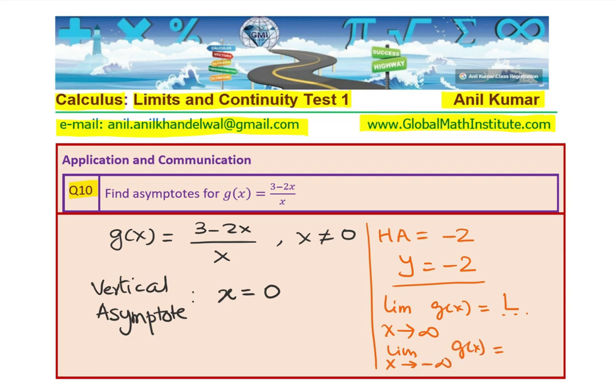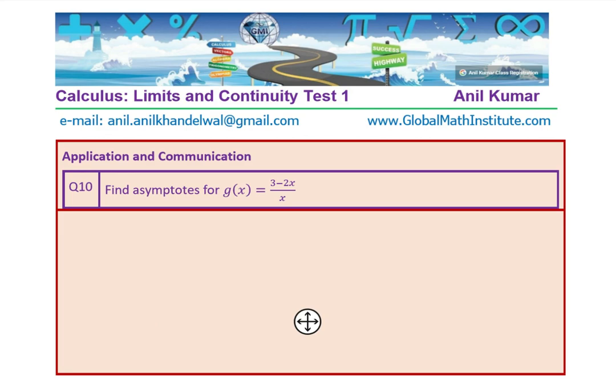That could be a different value also. There could be two horizontal asymptotes at times. So let us go through this method of finding limit.